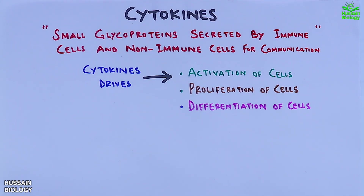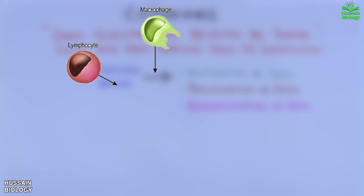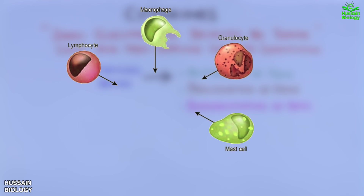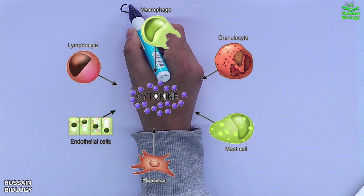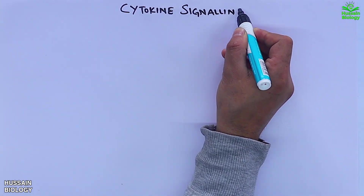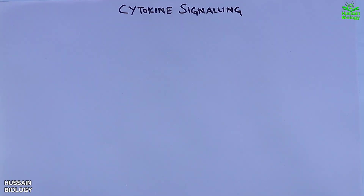Moreover, if we see the sources of cytokines, we see in the diagram we have lymphocytes, macrophages, granulocytes, mast cells, fibroblasts, and endothelial cells. From all these cells we get cytokine molecules. Now let's get to cytokine signaling, where we are going to see how cells communicate via cytokine molecules.